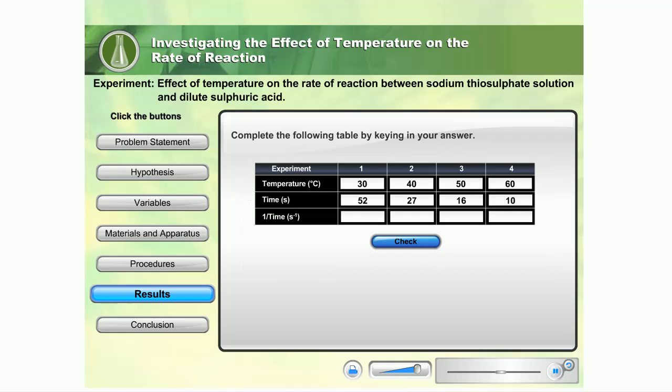Based on the results of the experiment, calculate the average reaction rate at different temperatures. Key in your answers into the fourth row of the table, then click on the check button. Well done!